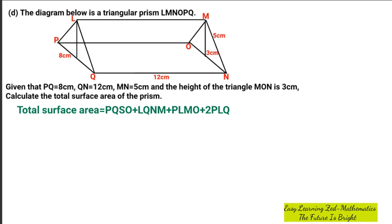Then we're going to say PQNO, the length is 12 cm which will be multiplied by 8 cm. Then plus the length of LQNM is 12 cm by 5 cm.